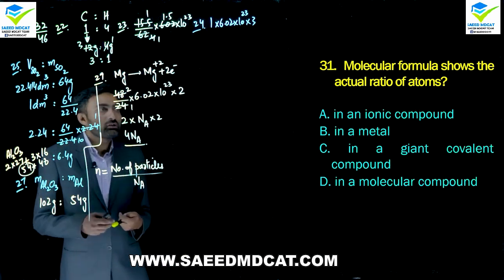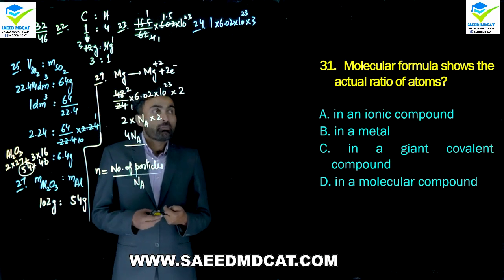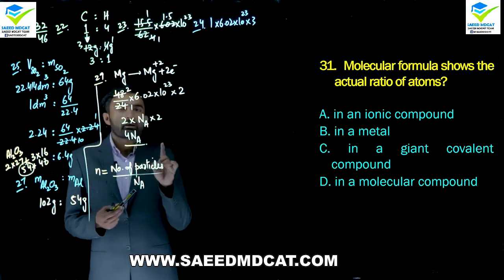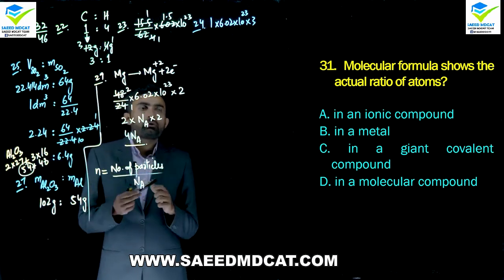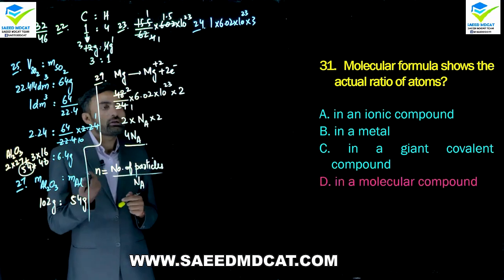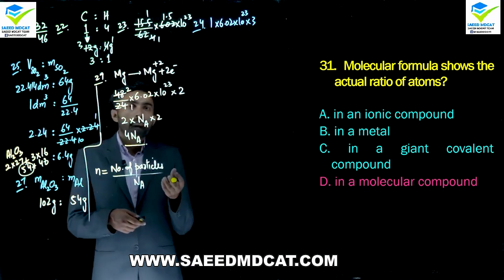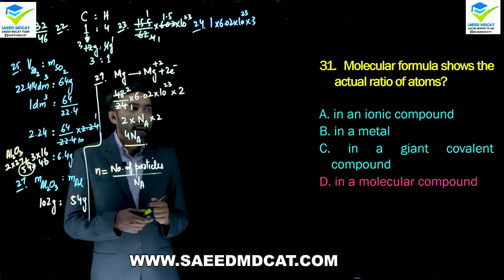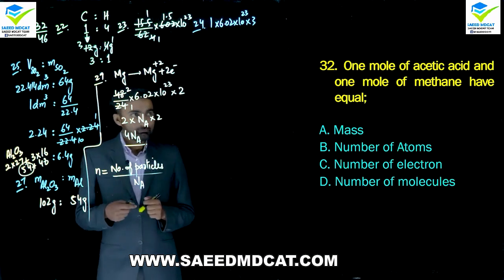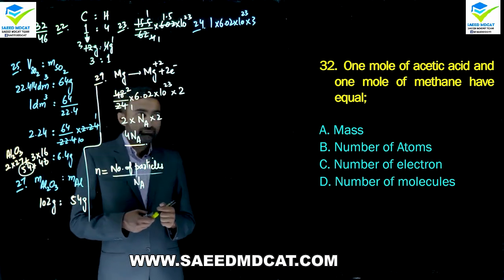Question 31: Molecular formula shows actual ratio of atoms, but it is not written for ionic compounds, metals, or giant covalent compounds. For giant covalent compounds we write empirical formula. So delta option is correct.